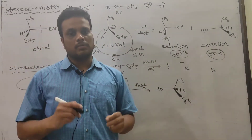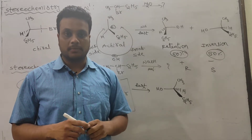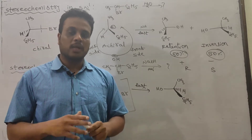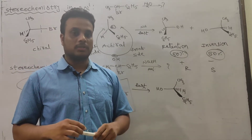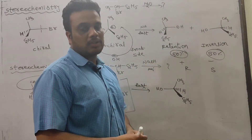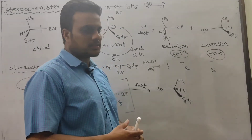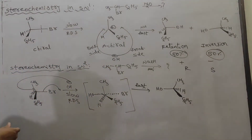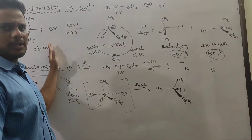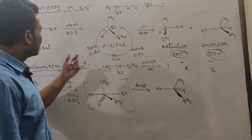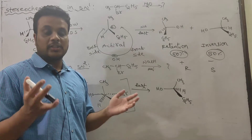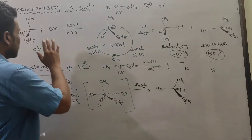Since two products are formed in equal amounts, this reaction is non-stereoselective. In stereoselective reactions, unequal amounts of products are formed and one product is the major. Here equal amounts are formed, so it is not stereoselective. It is also non-stereospecific, because whether you take the dextro or levo isomer, the product is always a racemic mixture — so different isomers give the same product.